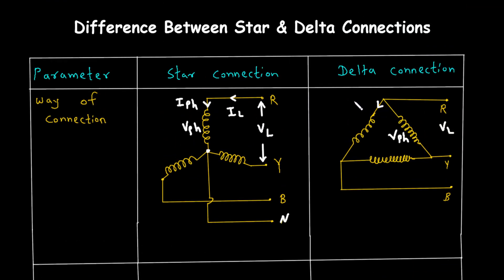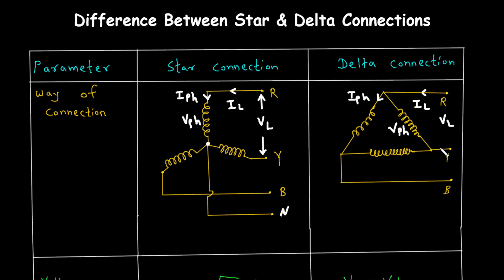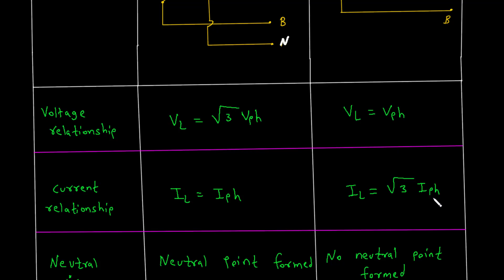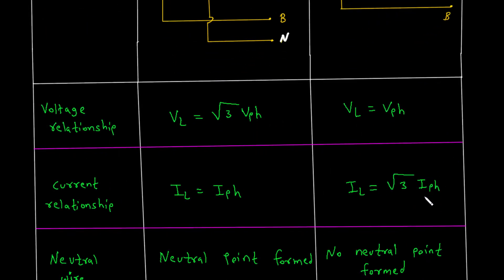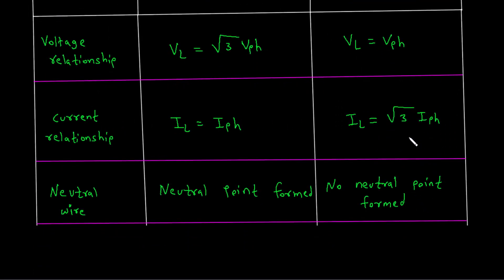When it comes to current in a delta connection, the current flowing through each line, I underscore L, is square root of three times the current through each phase winding, I underscore pH. This relationship is due to the way currents from each phase combine at the junction points. Mathematically, this is expressed as I underscore L equals square root of three times I underscore pH.